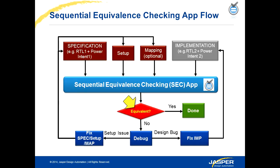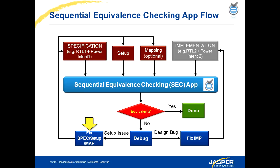You check if the outputs are equivalent in both designs — if yes, you're done. If not, you can make use of Jasper's debug capability and waveform viewer to point out where the mismatch came from. You may need to add new constraints, fix a setup issue, or fix your design in case it's a design bug.